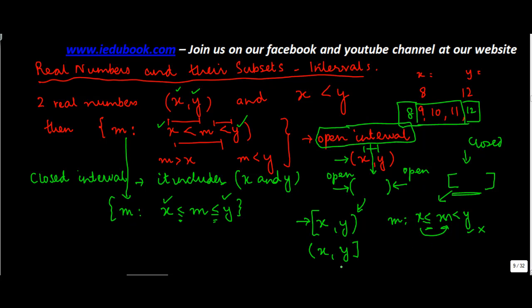Or you can write this as (x, y] and close it from here. This signifies a closure such that x is less than m which is less than or equal to y. So whichever side is closed, there you put in the equal to sign, indicating that element is included.